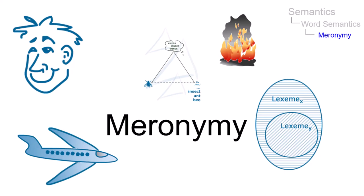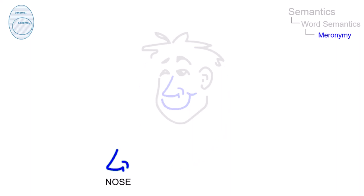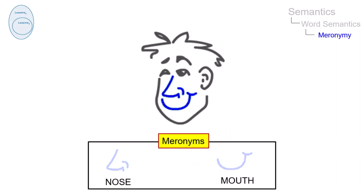Meronymy is a sense relation based on the notion of inclusion. It describes a part-whole relationship between lexemes. For example, nose and mouth can be regarded as parts or meronyms of face, the so-called holonym.